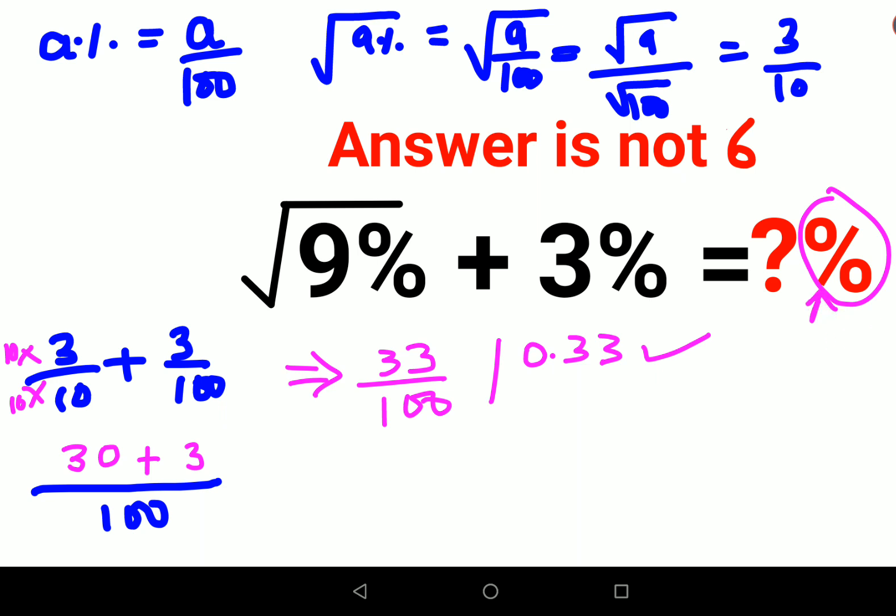see if you wanted to convert the percentage, you would divide by 100. If you want to convert a number into percentage, you need to multiply by 100. So 33 upon 100, when multiplied by 100, answer comes out to be 33%. So this is the answer for this particular question.